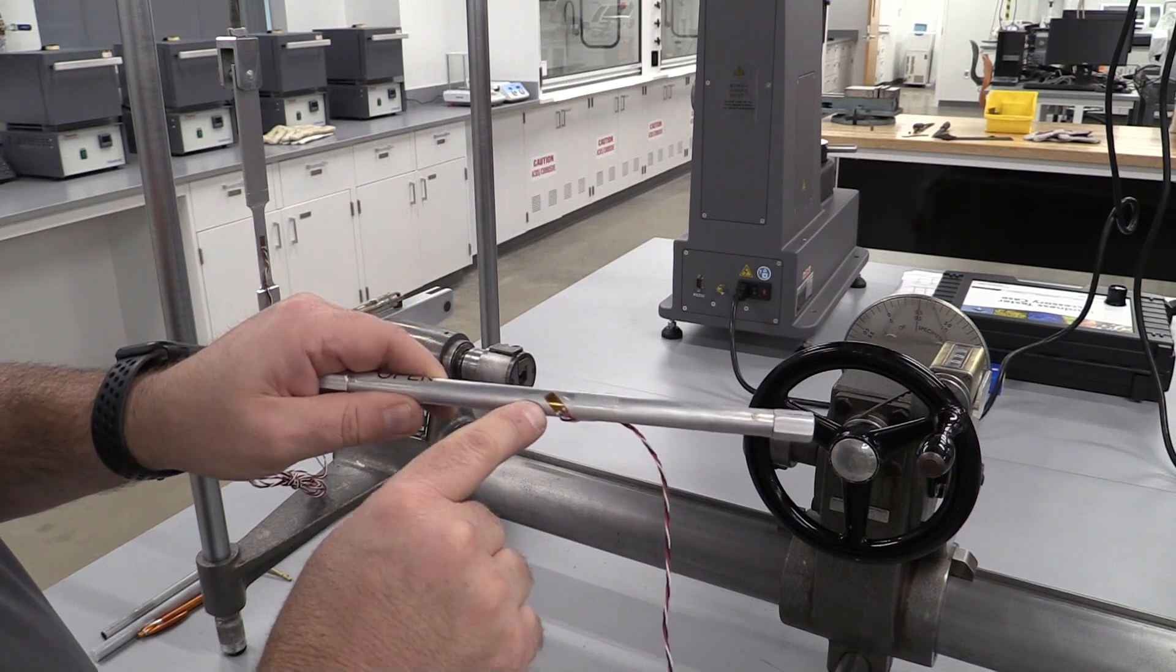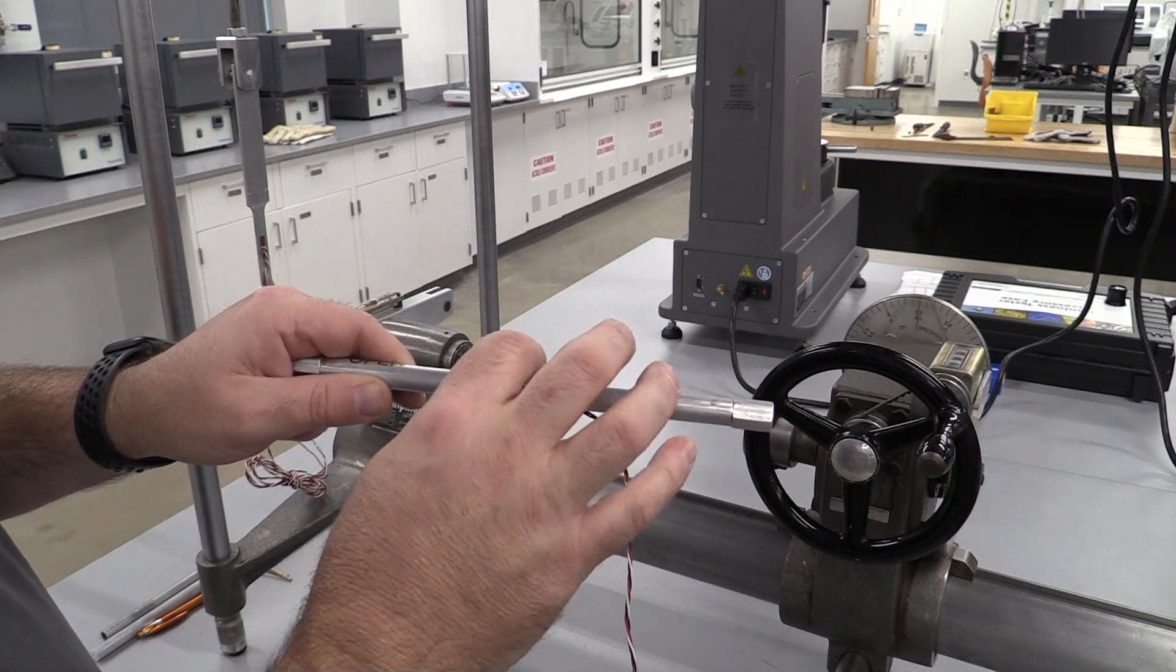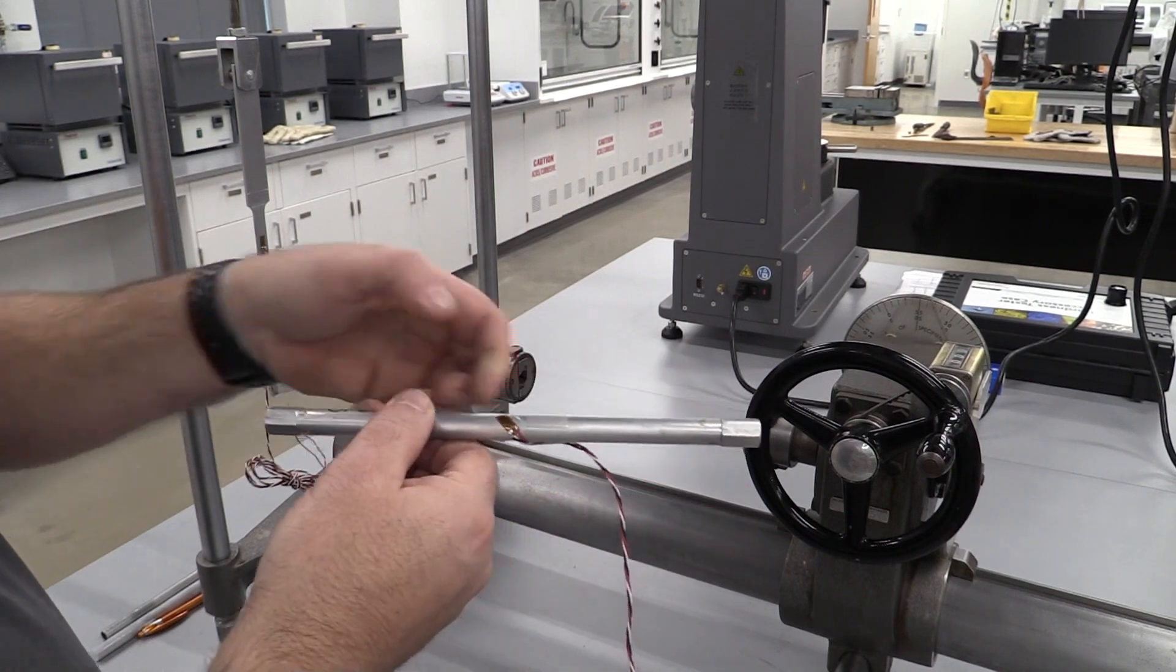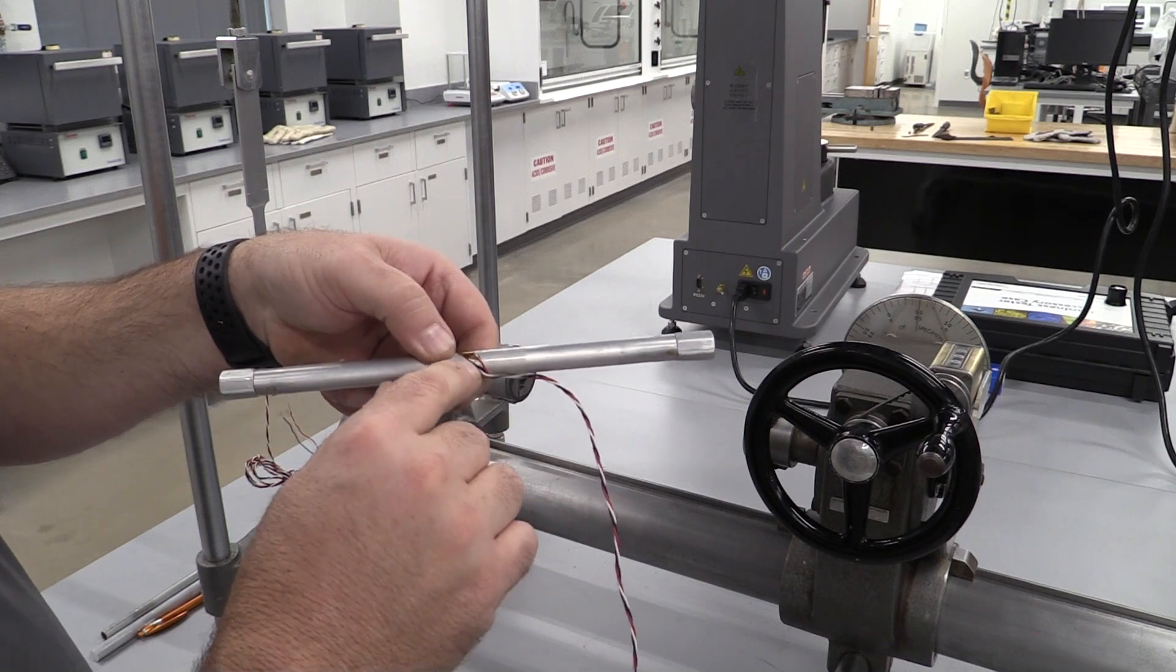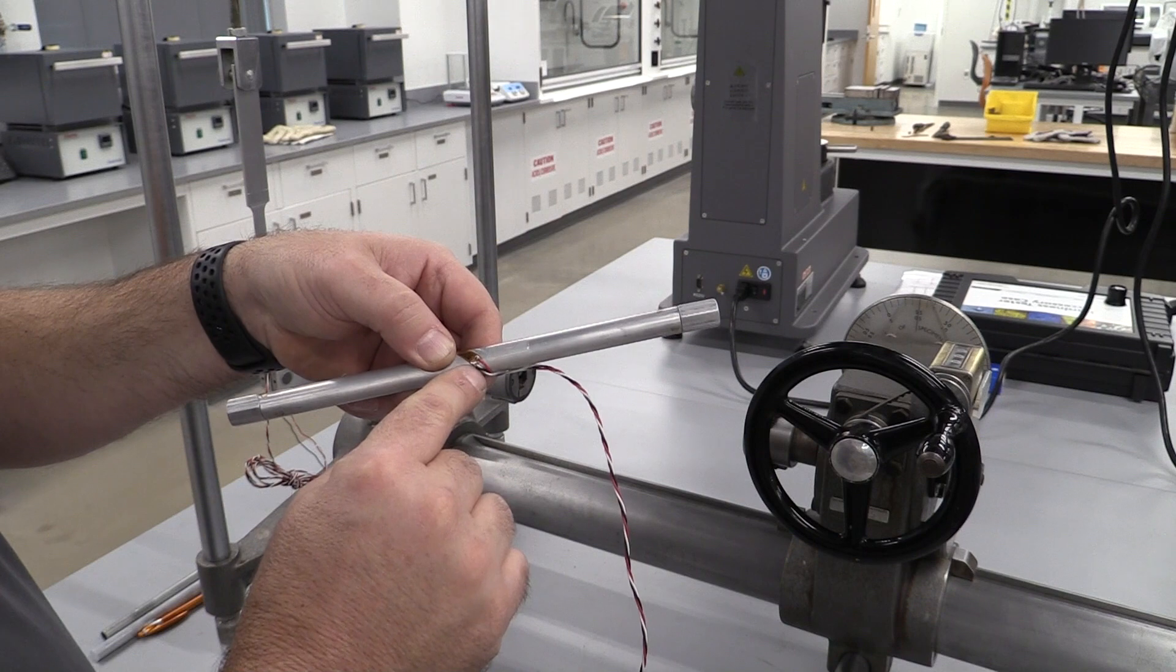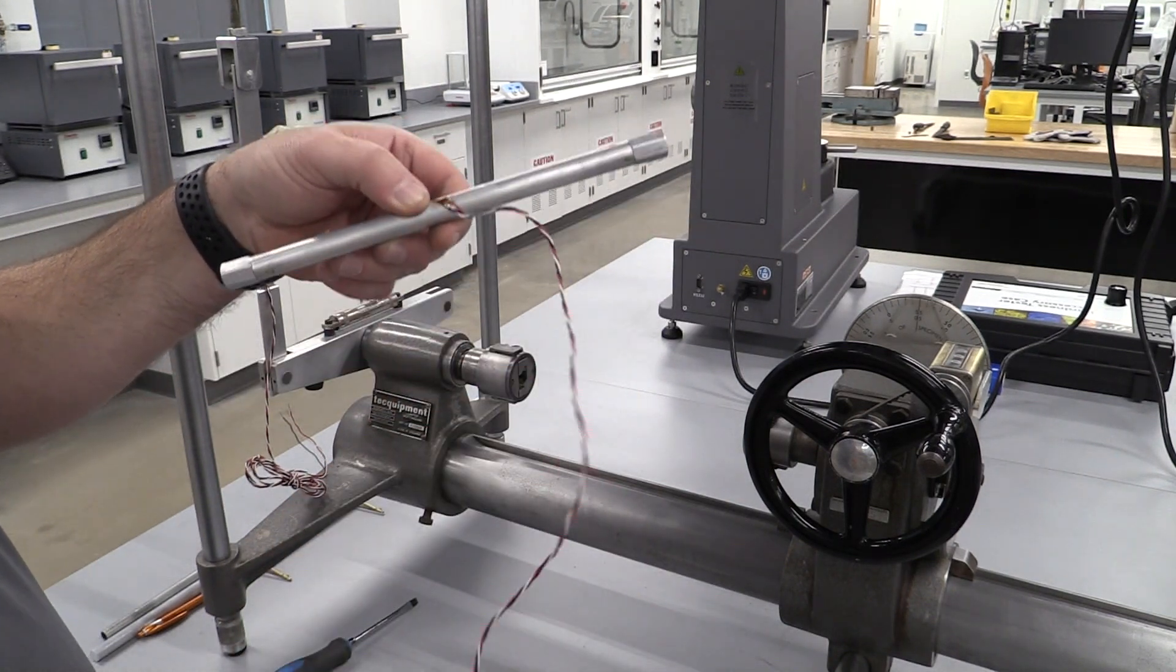We have a strain gauge on here. Now that strain gauge is really delicate so we don't want to damage this. I want you to see there's a grid on there and we talked about that in our prep video. We have two wires that are attached to one side - they're black and white - and another one is red.